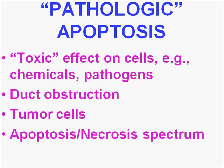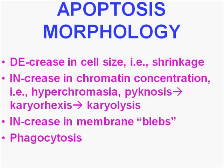In apoptosis there's a decrease in cell size or shrinkage. There's an increase in chromatin concentration, or what we call hyperchromasia. The cell then becomes smaller or pyknotic. It then breaks up by a process called karyorexis — fragmentation of the nucleus — leading to karyolysis, which is dissolving of the nucleus. Often you see an increase in membrane blebs as well, and the end result of all apoptosis is that the cell will then be phagocytized.